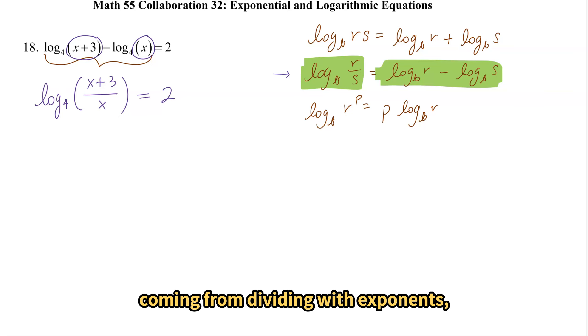And remember that that's coming from dividing with exponents. So a to the power m over a to the power n is equivalent to a to the power m minus n. And logs are exponents. So these exponent rules corresponding directly to log properties make sense.